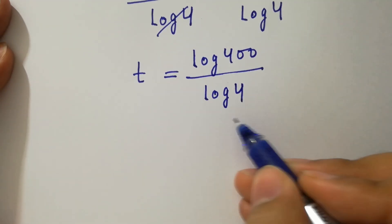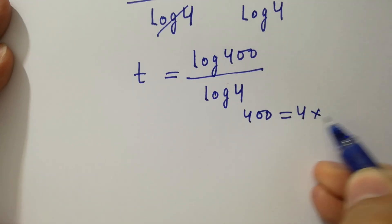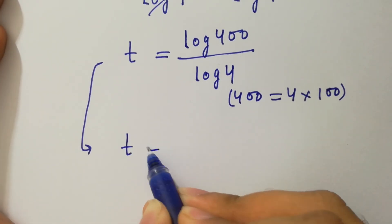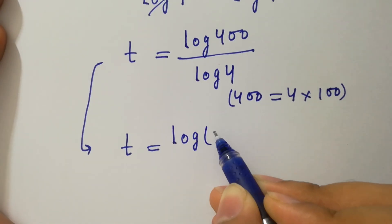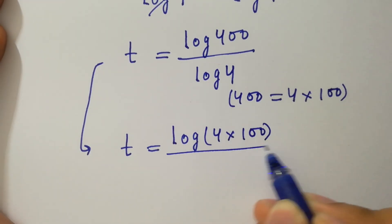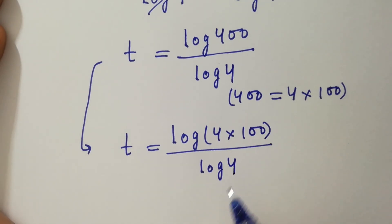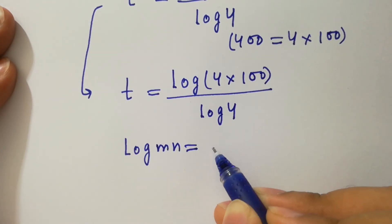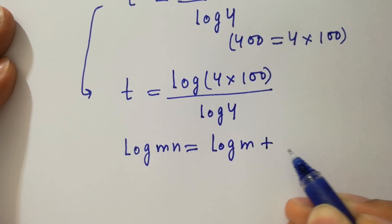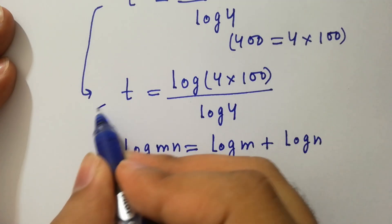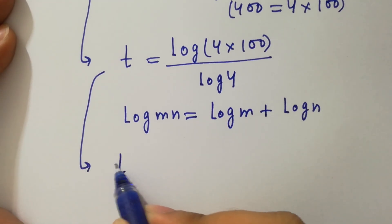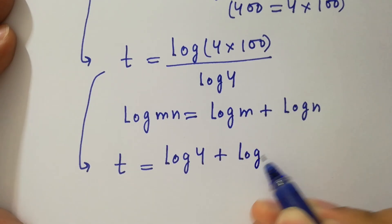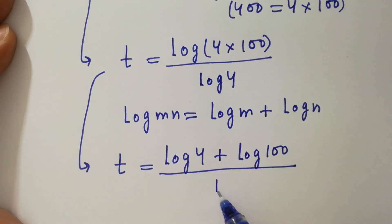Since 400 equals 4 times 100, we can write it as t equals log(4 times 100) over log 4. As log(mn) equals log m plus log n, we have t equals log 4 plus log 100, all over log 4.